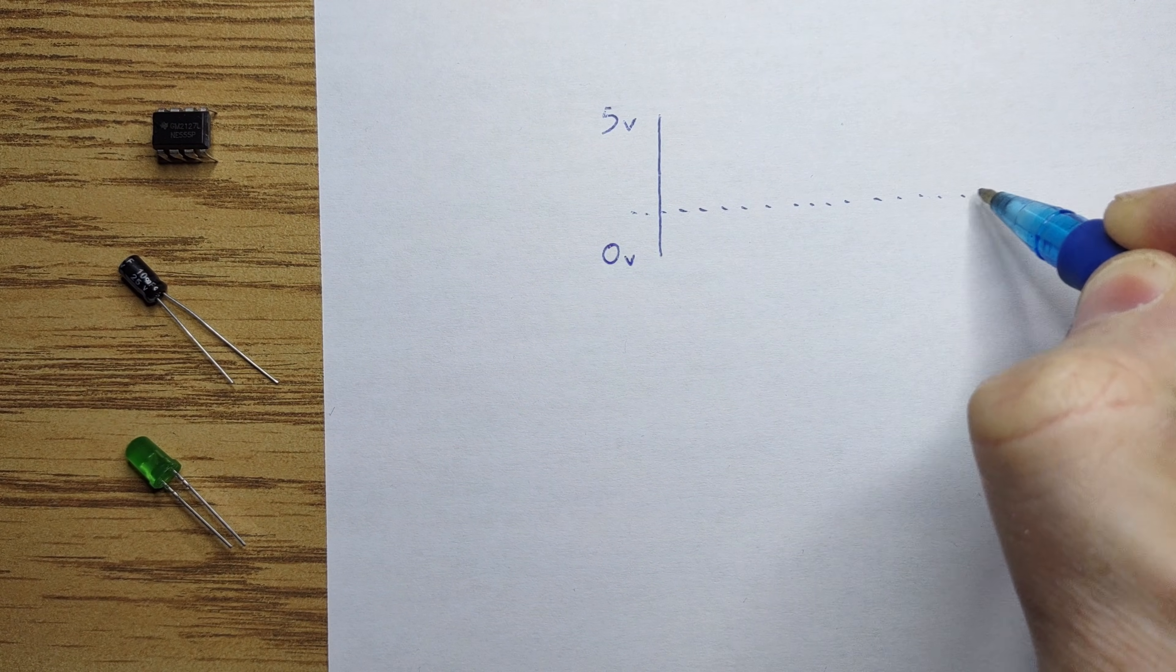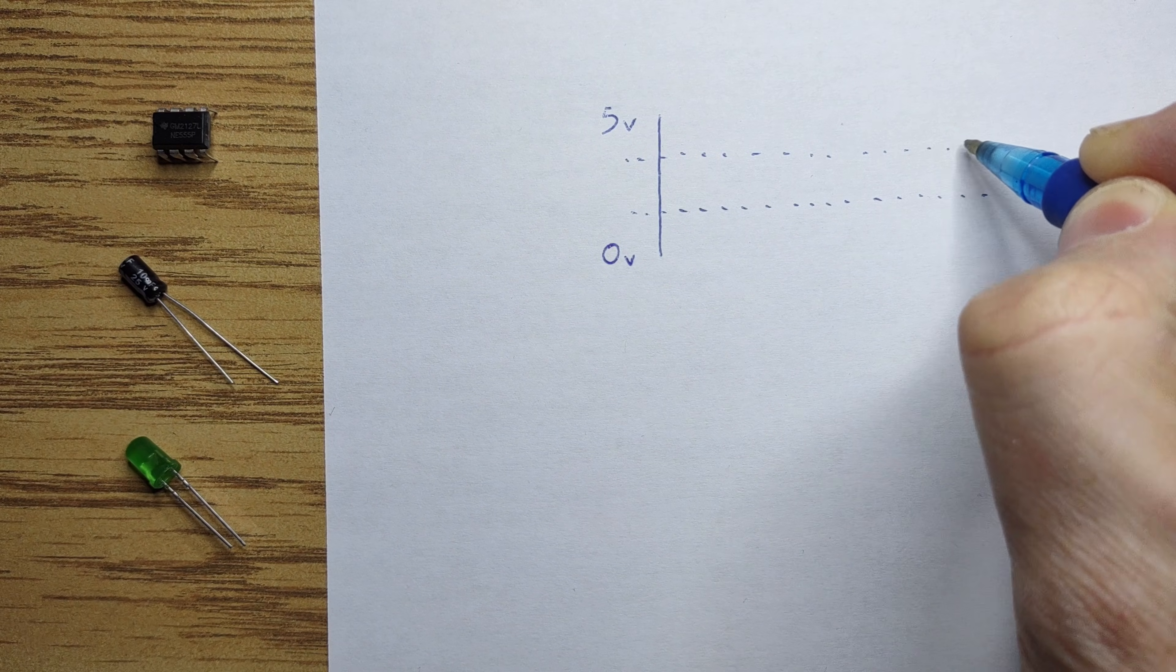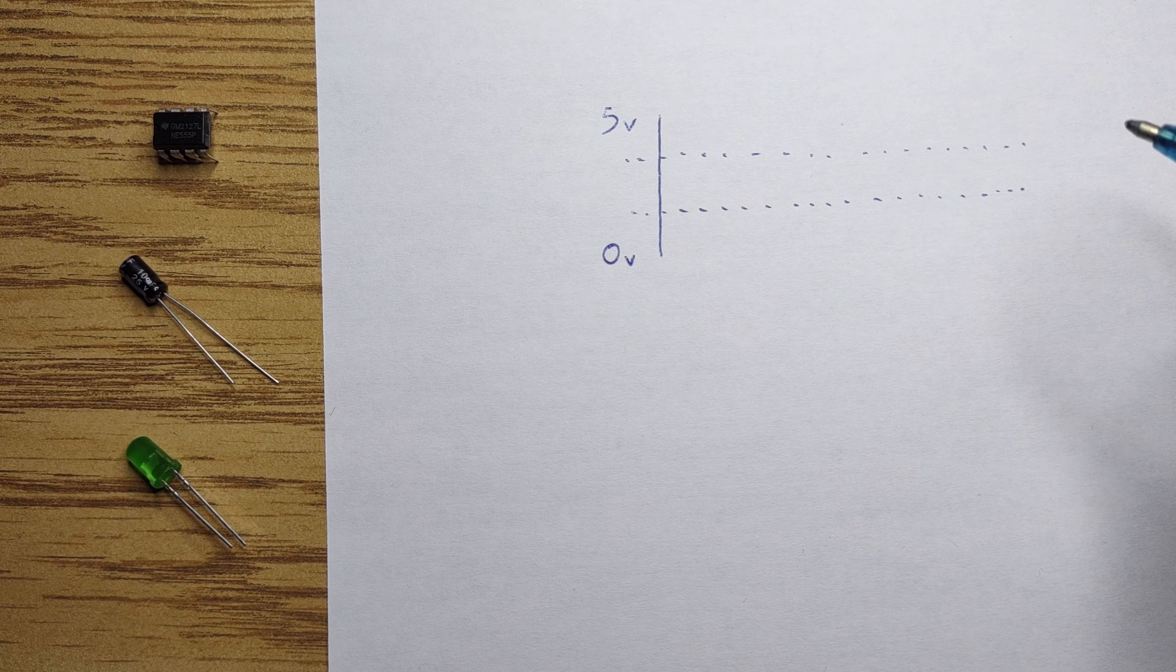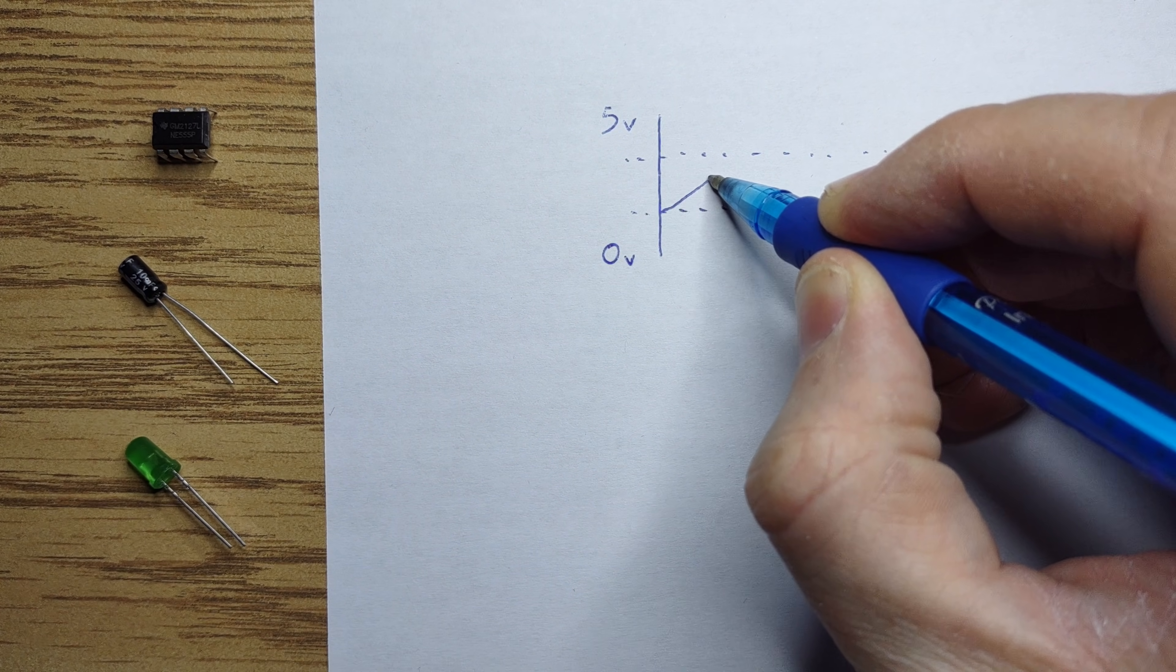The flip-flop acts as one bit of memory that stores whether we're charging or discharging a capacitor. Comparators monitor the voltage of the capacitor to switch between charging and discharging modes. When powered on, the 555 will start charging the capacitor until it reaches the two-third point.